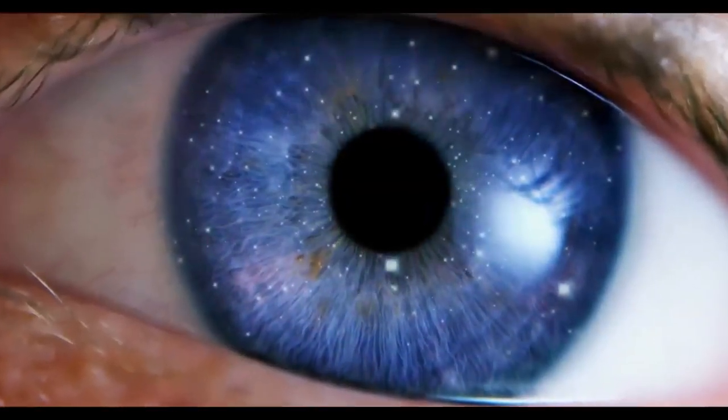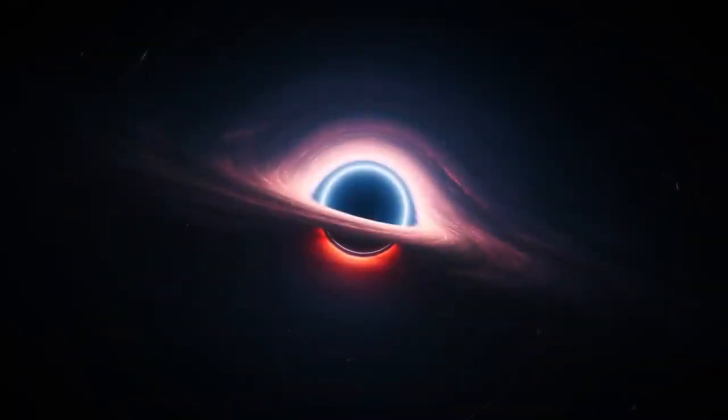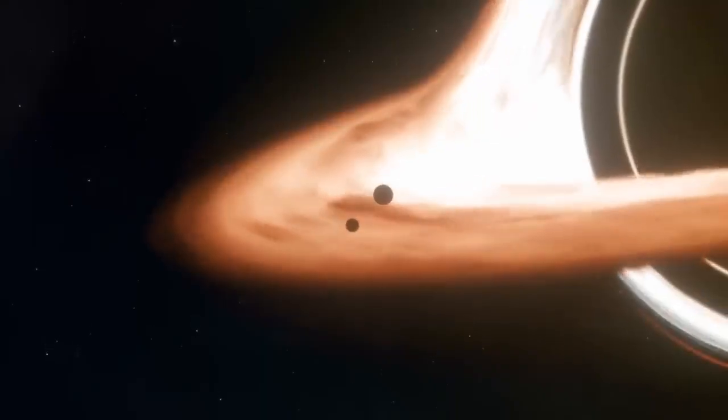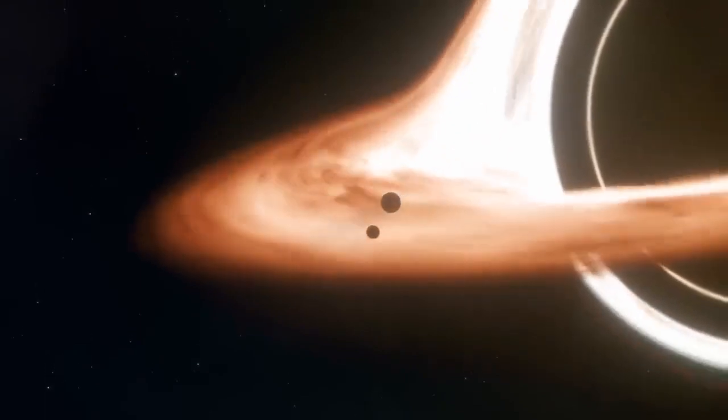The event horizon, primarily associated with black holes, serves as a boundary concerning our capacity to receive information. When an object crosses the event horizon of a black hole, it enters a region where no signals or information can escape.